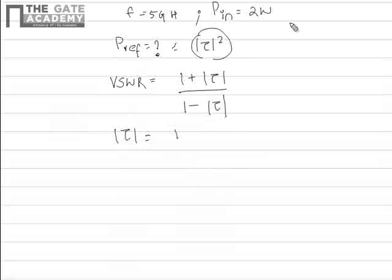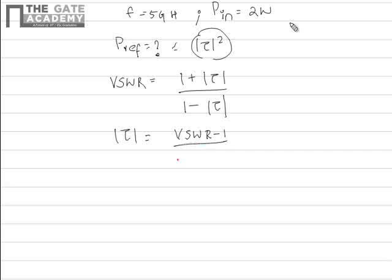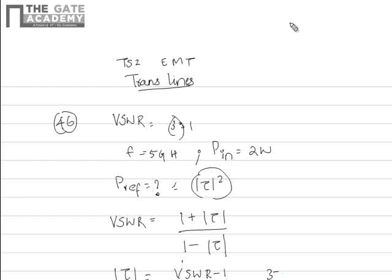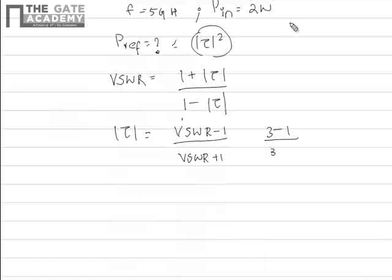Now |τ| is equal to (VSWR - 1) divided by (VSWR + 1). We know the value of VSWR is 3, so that is (3 - 1) divided by (3 + 1). This would be 2 divided by 4, simplifying to 1/2.